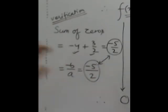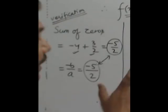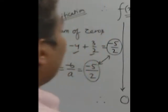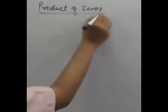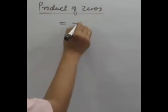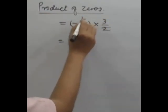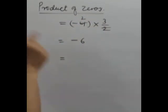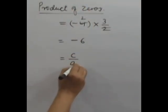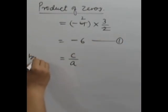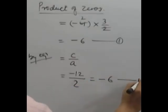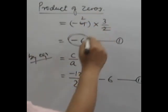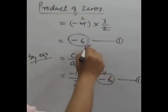One more verification here: the product of zeros. We know that the product of zeros — the product of zeros equals the constant term divided by the leading coefficient. The product of zeros came out to be -12/2 = -6. We can verify this using the formula, and the value from both methods are the same. So here we have verified both the sum and product of zeros.